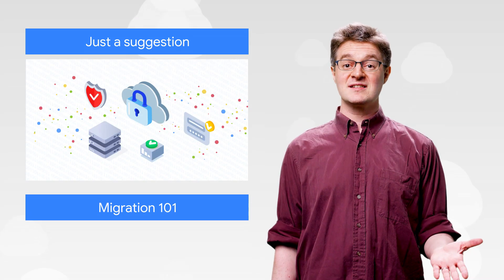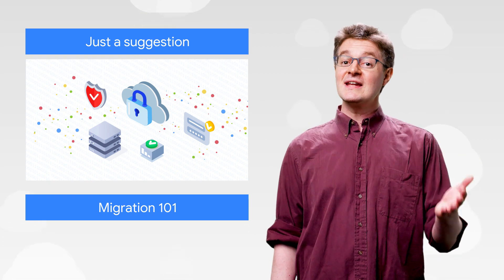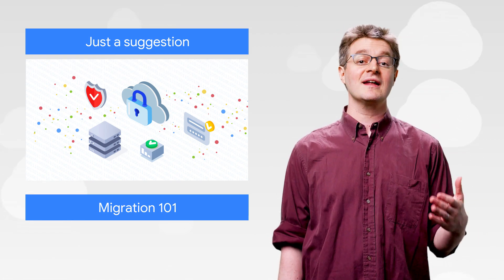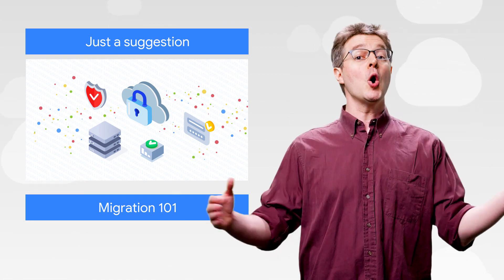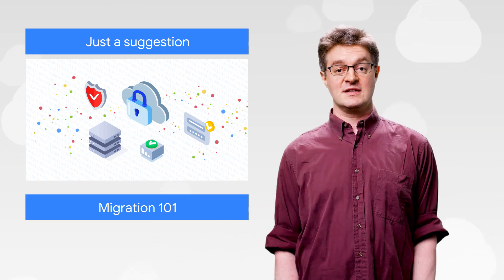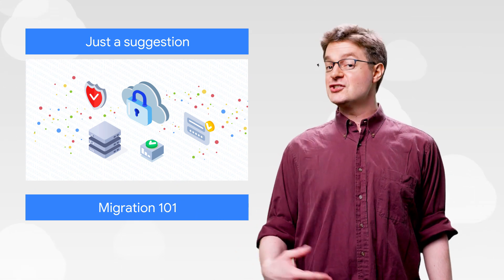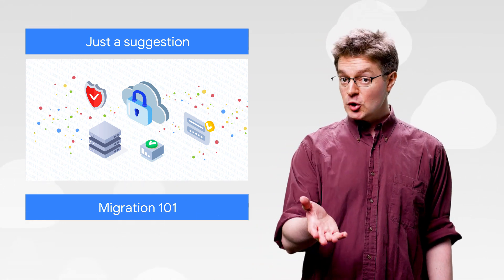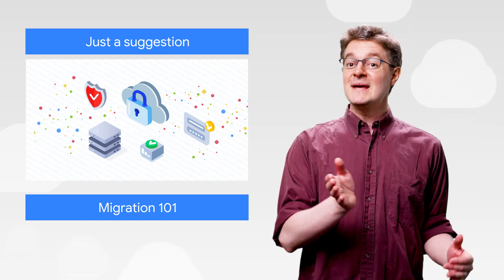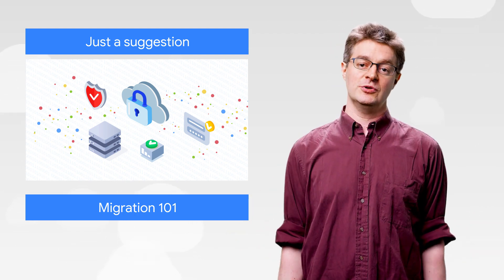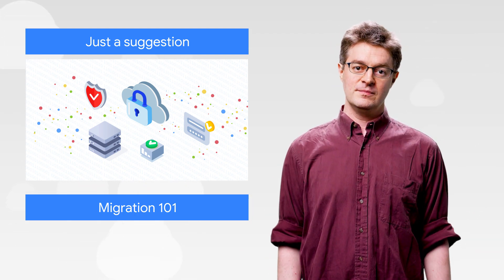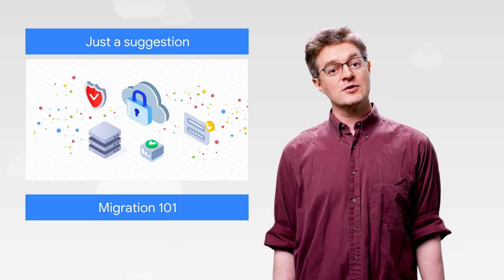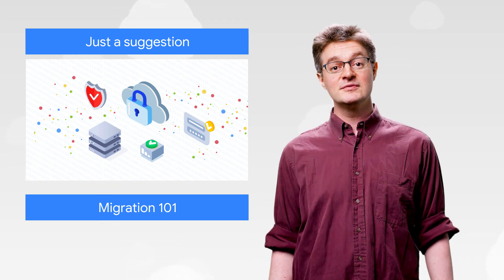Speaking of access, the new identity and access management recommender for GCP can automatically detect overly permissive access policies. Then it generates suggested adjustments to your permissions based on the access patterns of similar people in your organization. Read the full article to learn how recommenders work, then try them out yourself.